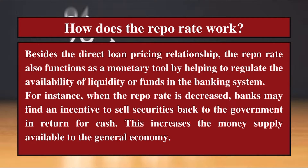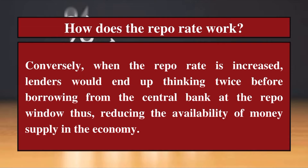Now let's see how the repo rate works. Besides the direct loan pricing relationship, the repo rate also functions as a monetary tool by helping to regulate the availability of liquidity or funds in the banking system. When the repo rate is decreased, banks may find an incentive to sell securities back to the government in return for cash, which increases the money supply available to the general economy. Conversely, when the repo rate is increased, lenders would think twice before borrowing from the central bank at the repo window, thus reducing the availability of money supply in the economy.